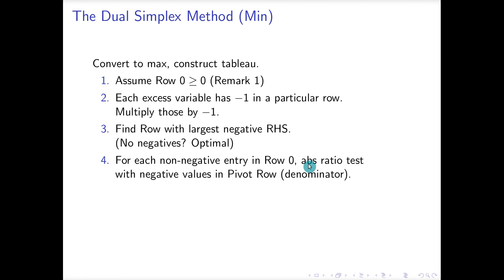So once you found your pivot row and your pivot column, you've got a pivot entry. By the way, if there are no negative values in your pivot row so that you cannot do the ratio test, that means that the problem is infeasible, and we talked about that in the last video. Otherwise we can pivot and then we repeat from step 3.